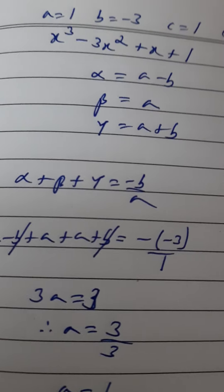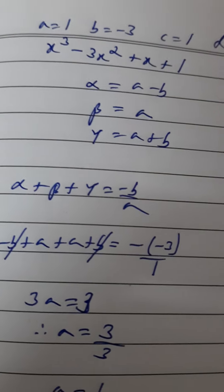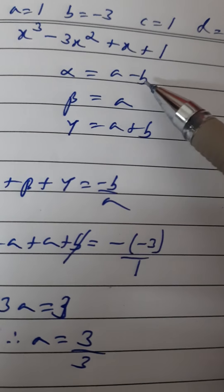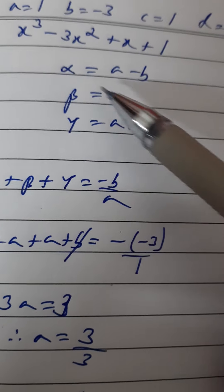Okay, in question number three, there's a polynomial given: x³ - 3x² + x + 1. The three zeros given to us are a - b, a, and a + b. So this is alpha, beta, and gamma.